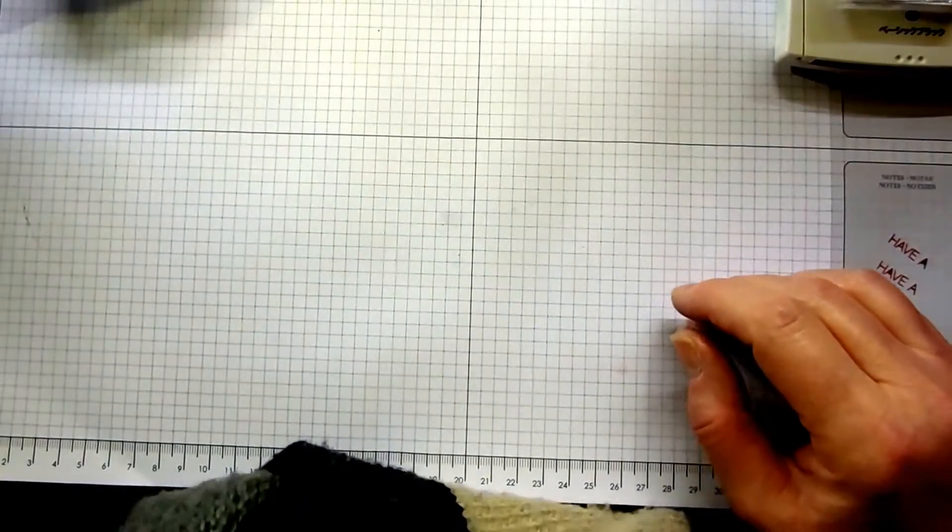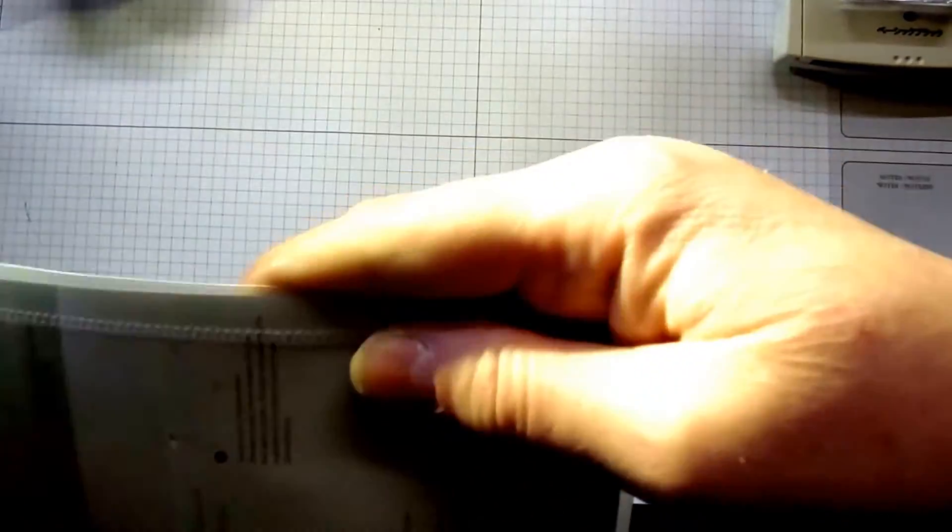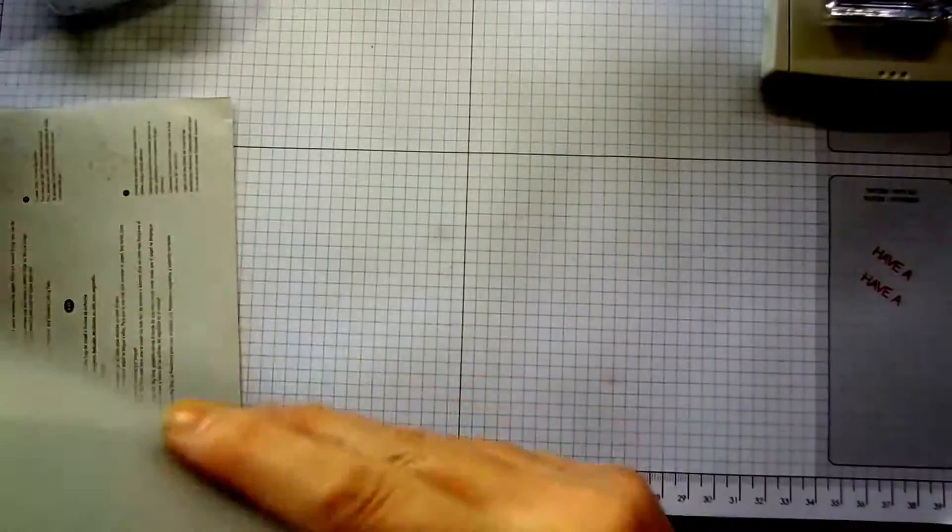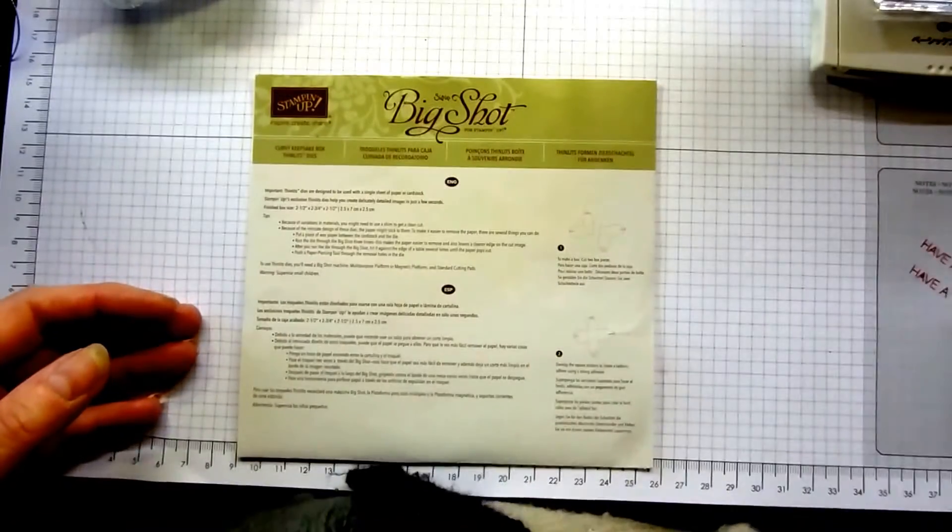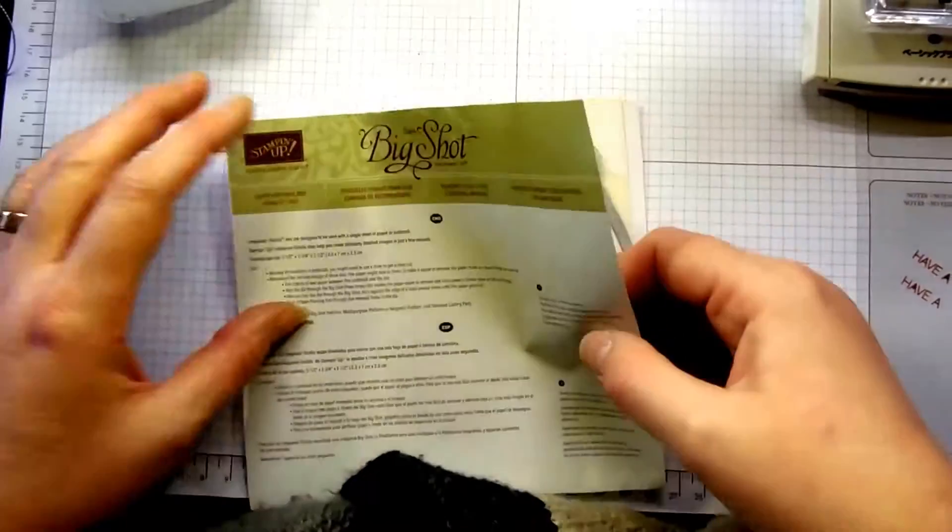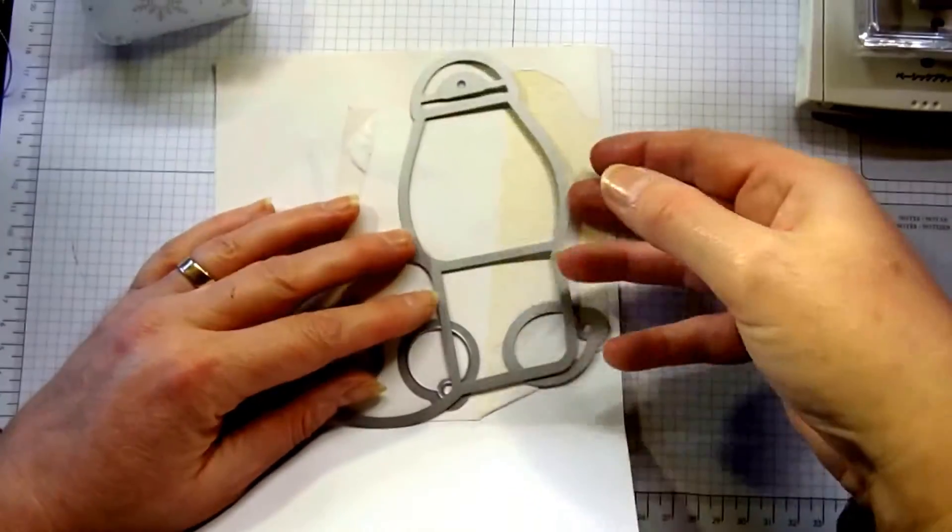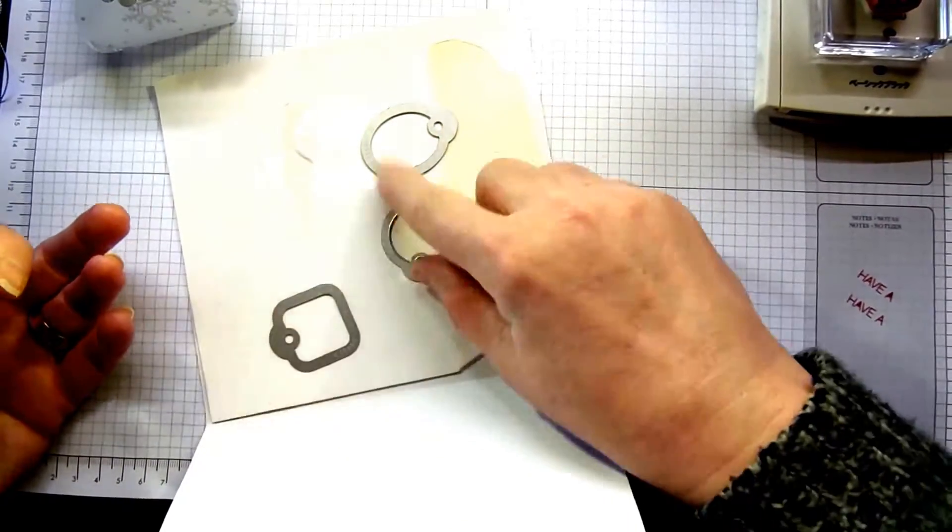I'm going to put that over there. You'll be amazed how quick and simple this bag is to make. The curvy keepsake box comes as Framelits Thinlits dies. They do come with tags and little tag thinlits - there's three of them.